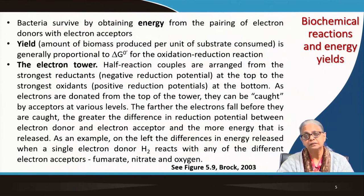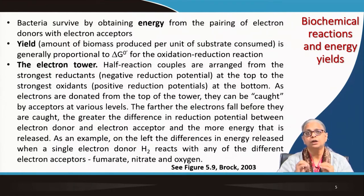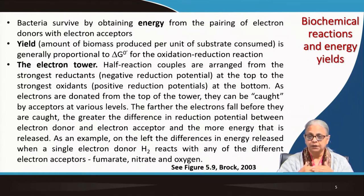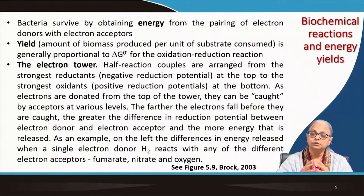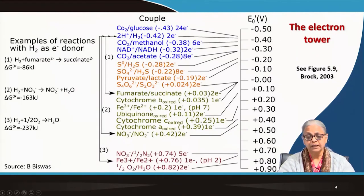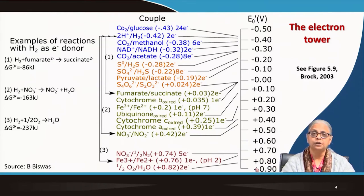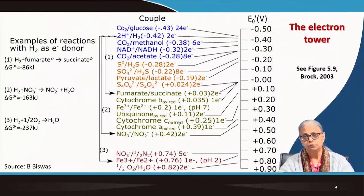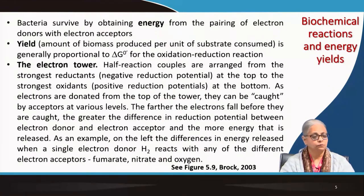Yield is the amount of biomass produced per unit of substrate consumed. It is generally considered proportionate to the delta G⁰ for the oxidation-reduction reactions when you combine the electron donors and acceptors. Glucose and oxygen is the best example of aerobic respiration, and no other terminal electron acceptor in combination with other organic compounds will give you a higher yield in terms of biomass or energy.